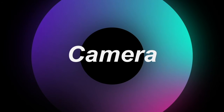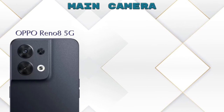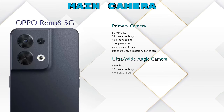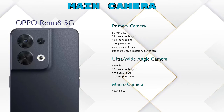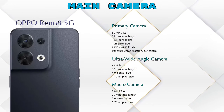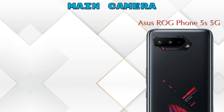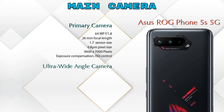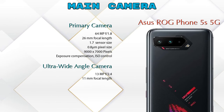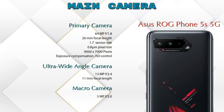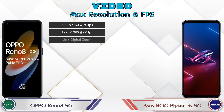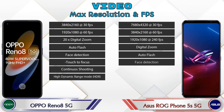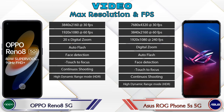Now let's see the details about cameras. For the rear camera, the Reno 8 5G has three cameras: a primary camera, an ultra-wide angle camera, and a macro camera. The ROG Phone 5S 5G also has three cameras: primary, ultra-wide angle, and macro. For video, the Reno 8 5G has eight and the ROG Phone 5S 5G has nine different types of video features available.